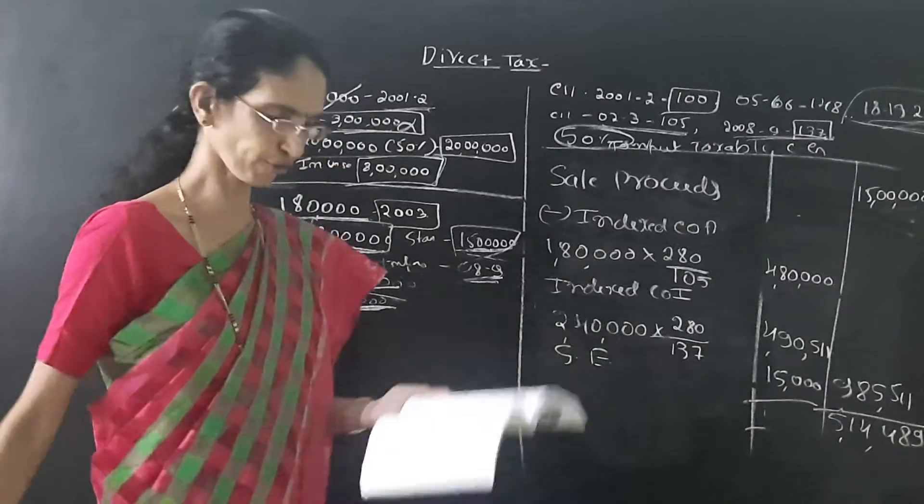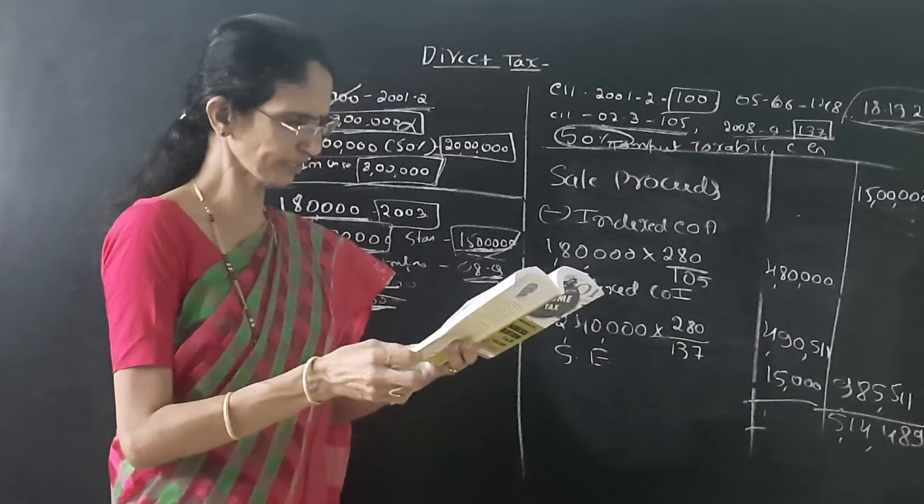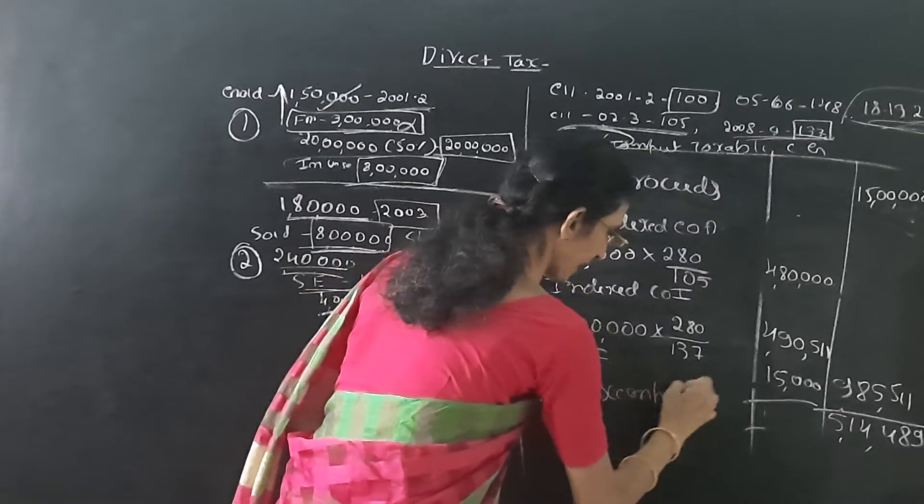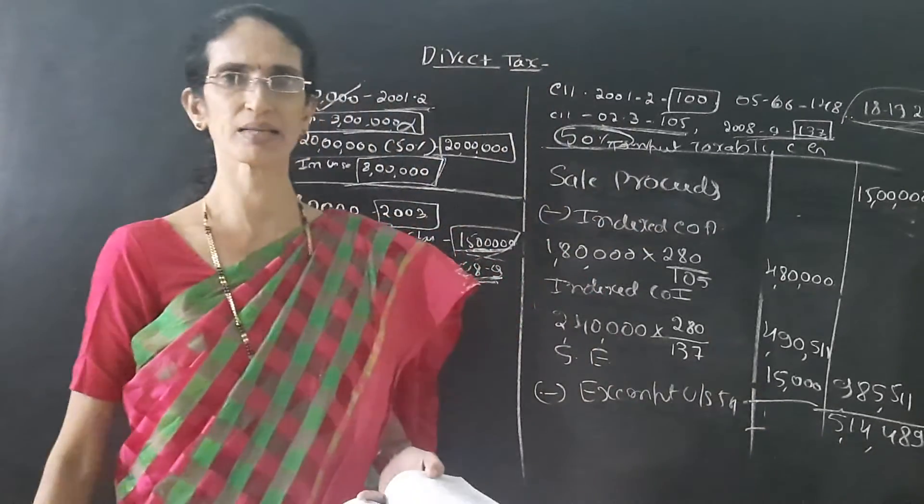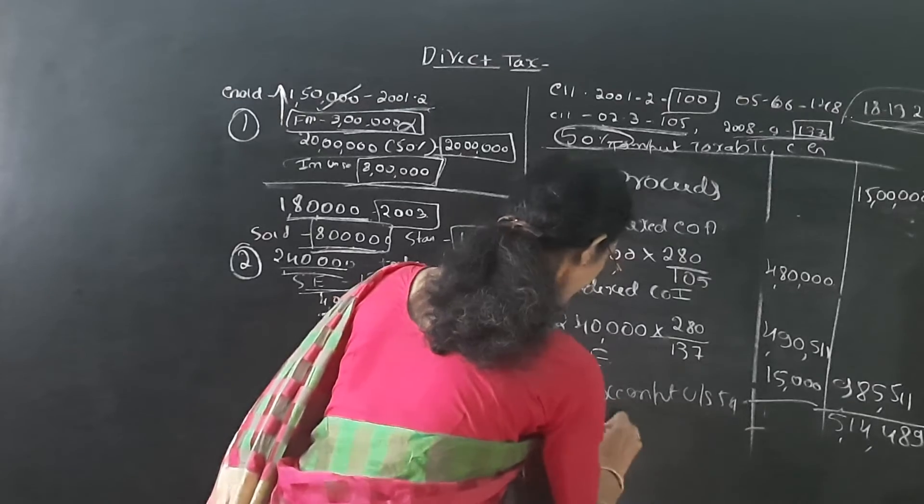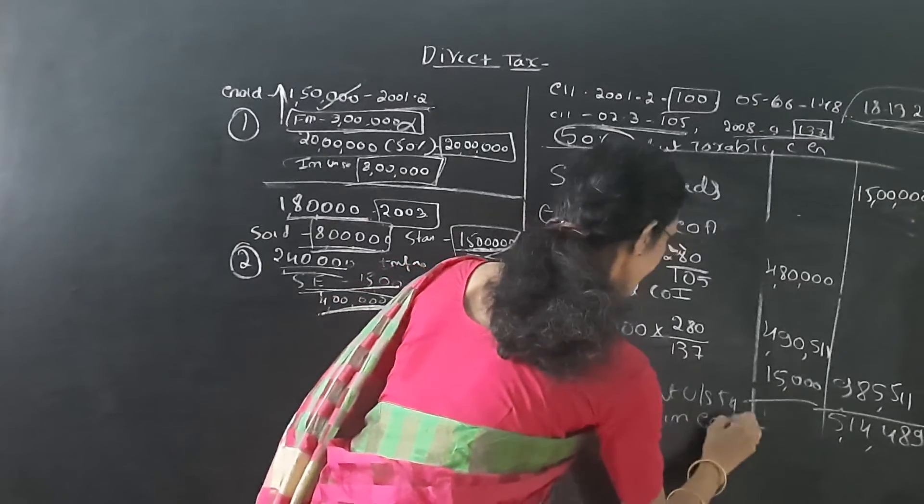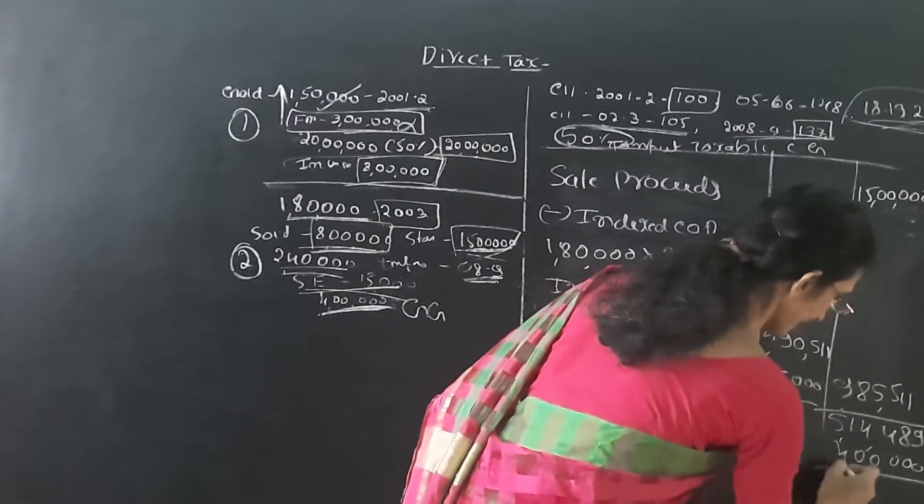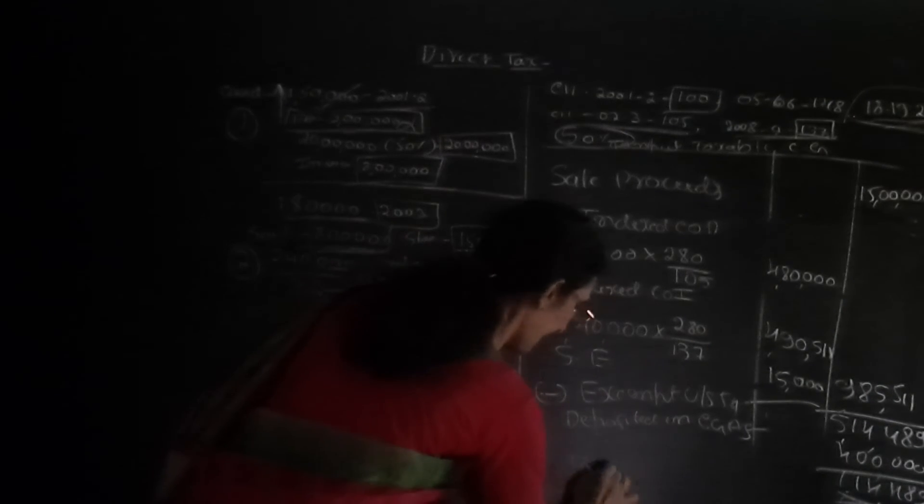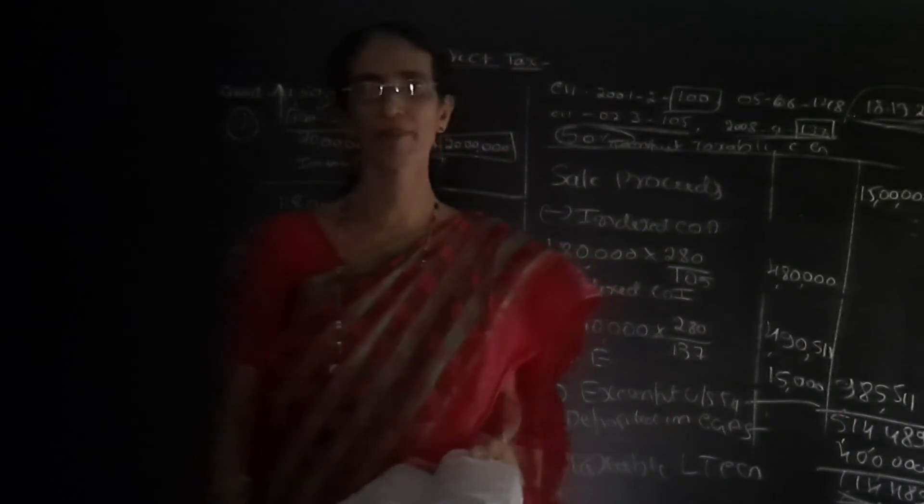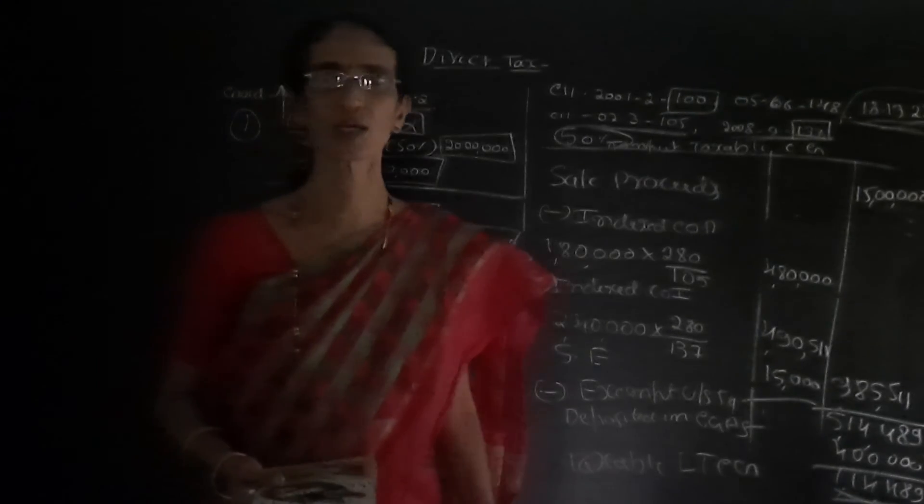Then we invested rupees 4 lakh in capital gain account. Here we have to write less exempt under section 54. Deposited in CGAS, the amount is 4 lakh. Deduct it. We get 1,14,489. 1,14,489 is the taxable long term capital gain. With this, we can end this problem. It is over. Thank you.